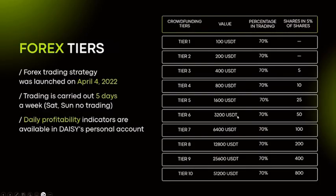To get into Forex, you contribute to so-called tiers — tiers one through ten. You can buy every tier multiple times, but you have to start from tier one and advance sequentially. You cannot jump straight to tier four. Everyone starts with tier one, which is 100 USDT on the Tron blockchain, so you will need USDT TRC-20 to start with Daisy. On tier one, 70% goes into trading, which is the same for tiers two through ten.